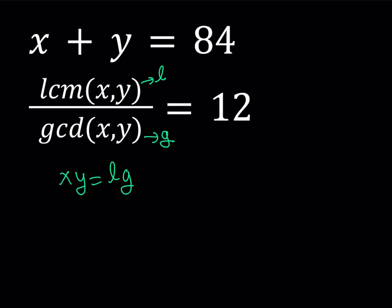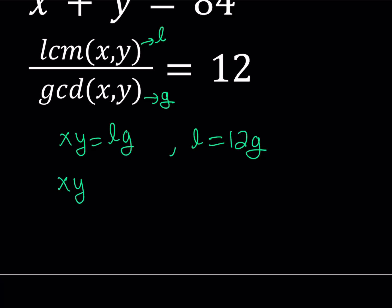If L stands for the LCM and G stands for the GCD, I can write down an equation: XY equals LG. Now we didn't use any of the givens yet. We're also given that the L to G ratio equals 12, which is kind of nice, so I can write L as 12G. We're going to replace L with 12G. That's going to give us XY equals 12G times G, which is 12G squared, where G stands for the greatest common divisor of X and Y. That's the first equation we're coming up with.